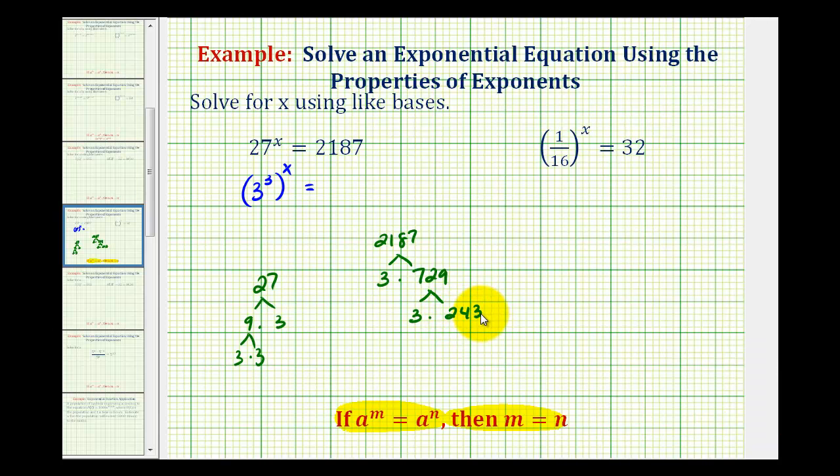2 plus 4 plus 3 equals 9, which is divisible by 3, so so is this number. This is 3 times 81. 81 is equal to 9 times 9, and 9 is equal to 3 times 3, so we have 1, 2, 3, 4...